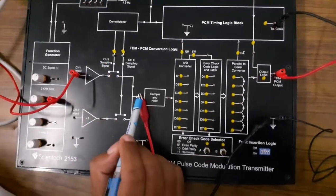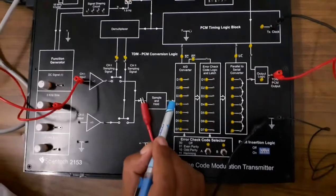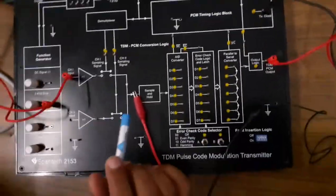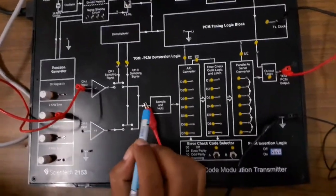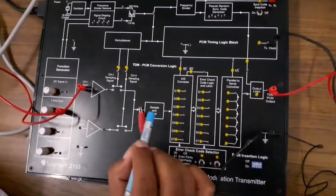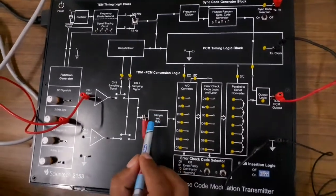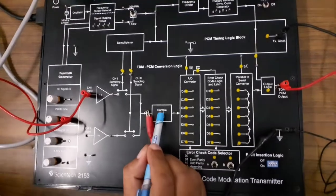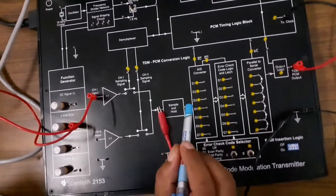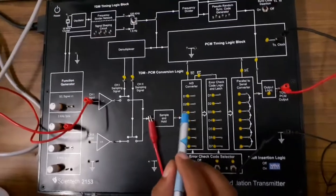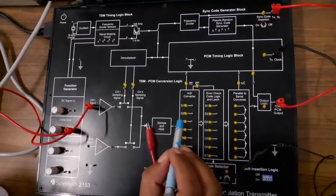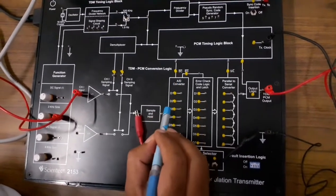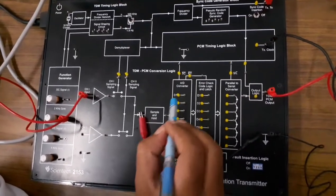After the sampling, we get the sampled signal. After the sample and hold, we get the output of the sample and hold circuit, which holds the signal at a particular value. This sample and hold circuit gives the sample and hold signal. After sampling, the signal is quantized and encoded — an analog to digital converter converts the sampled signal into an encoded signal.